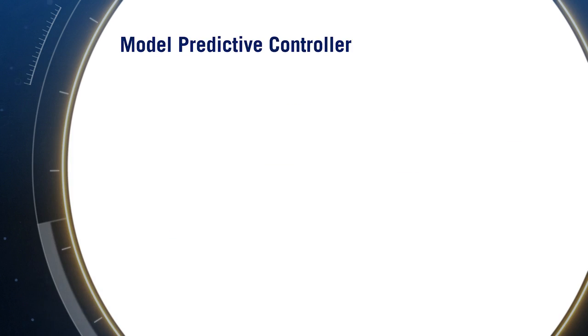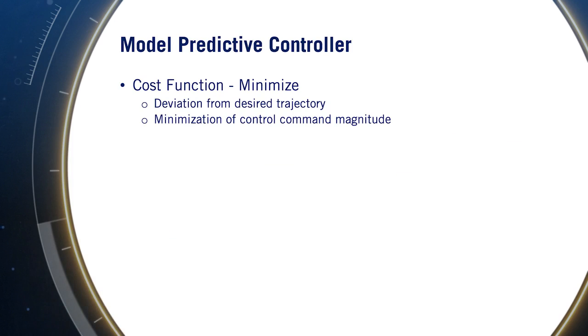The MPC optimization will be set up as follows to perform a double lane change maneuver. First, we define a cost for tracking the desired trajectory, which includes deviation from the desired trajectory and minimization of control command magnitude.